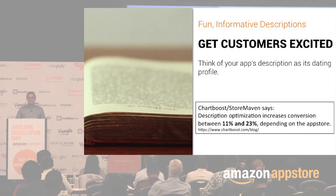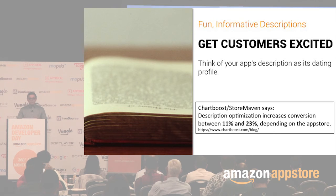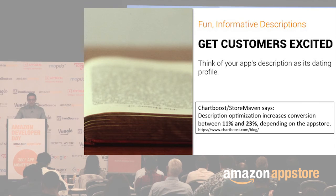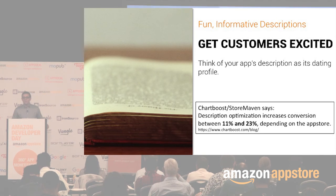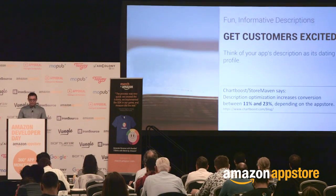Some other suggestions: write your description like it's a dating profile. Start with a bang — the first line really sells it. Then highlight all the standout features in subsequent paragraphs, hitting all the high notes and explaining your advantages over the competition. Use compelling subheads so each section starts with something that gets the user to keep reading. Include actual details because creative titles will reel people in, but it's the details that convince users to download. Chartboost data shows punching up the description can add 11% to 23% conversion lift depending on the App Store.